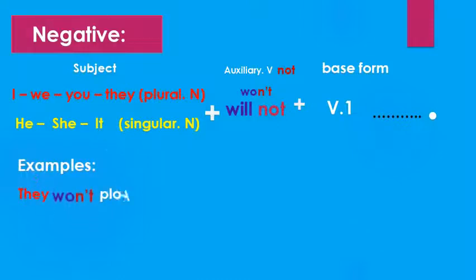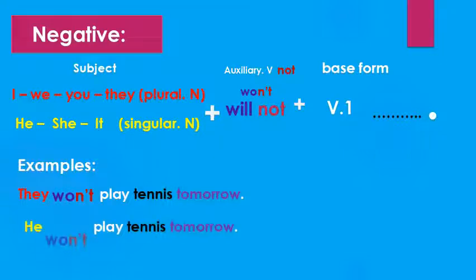Here we have examples: They won't play tennis tomorrow. They won't play tennis tomorrow. Another one: He won't play tennis tomorrow. He won't play tennis tomorrow.